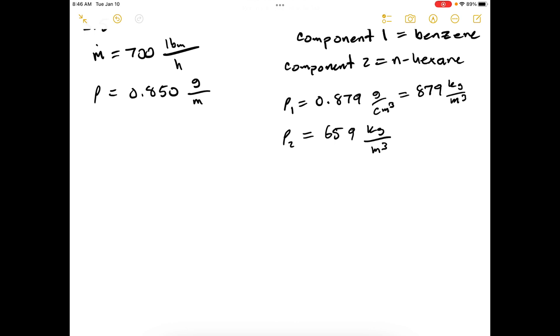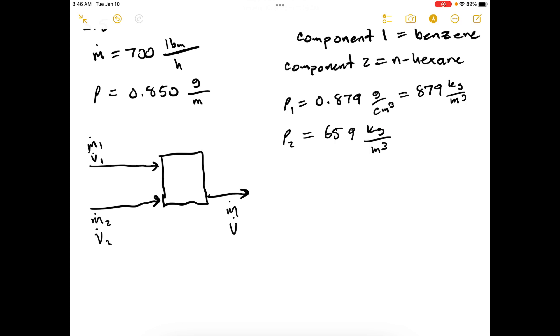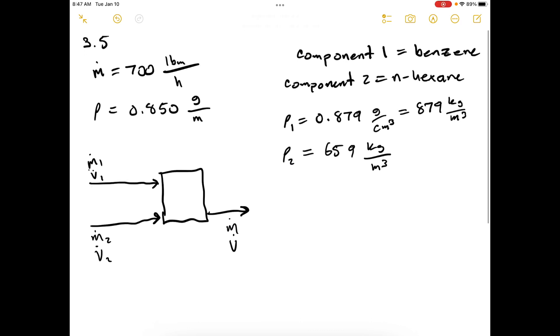Now, what do we know and what do we want to know? We're trying to figure out the mass and volumetric feed rates of the streams. So we've got this mixer unit here with one stream coming in and another stream. They have mass flow rates and volumetric flow rates of benzene and hexane, and then a certain amount coming out.